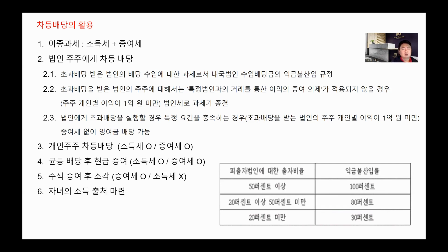신설법인을 설립하고 그 다음에 그 신설법인에다가 배당을 할 수가 있겠죠. 그 신설법인에다가 투자를 하는 거죠. A라는 법인은 기존 법인이고, 거기에서 증여나 양도를 통해서 지분을 계산하지 않고, 오히려 신설법인을 설립해서 그쪽으로 매출을 조금 일으키고, 배우자나 자녀들로 지분 구성을 새롭게 해서 초과 배당을 하는 경우입니다.